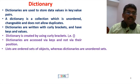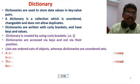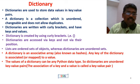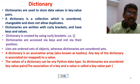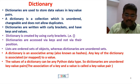Lists are ordered sets of objects, whereas dictionaries are unordered. A dictionary is an associative array — any key of the dictionary is associated to a value, forming a one-to-one key-value mapping. This is called a key-value pair.